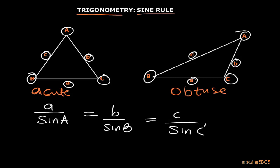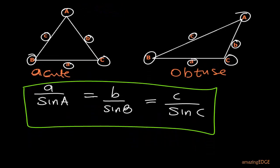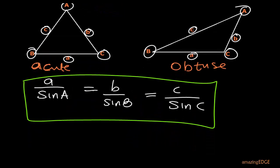This is what we call the sine rule. When do we use it? You use the sine rule when you are solving a triangle that is not a right-angled triangle — such as these two triangles shown. You can solve for sides or angles using this sine rule.